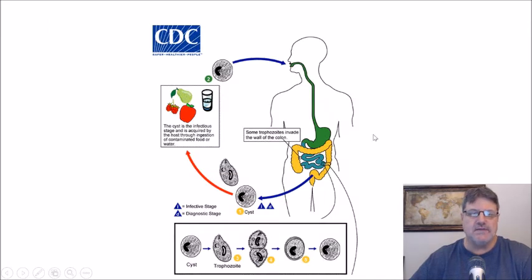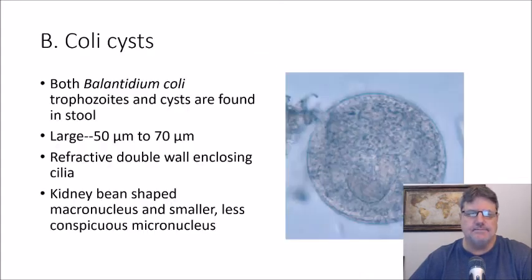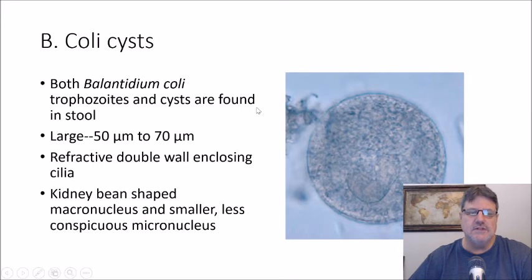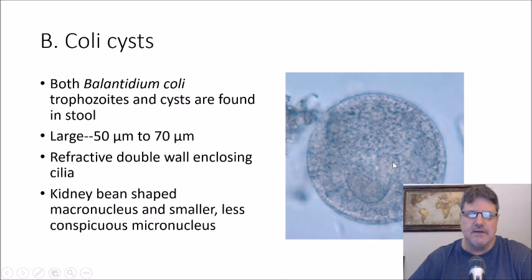The life cycle is quite simple, much like other protozoa we've discussed. Both the trophozoite and the cyst can be found in the stool. These are very large parasites — up to 70 microns in size — so they're really hard to miss. The cyst has a refractive double wall enclosing the cilia and a kidney bean-shaped macronucleus, which is somewhat hard to see in the slide picture, plus a smaller, less conspicuous micronucleus.